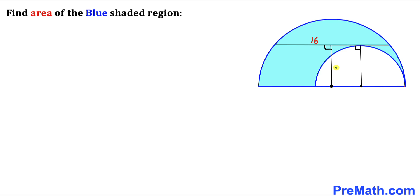Moreover, this line is going to be perpendicular to this chord as well, since these two lines are parallel. Let me call this radius for this smaller semicircle as lowercase r. Then this length is going to be lowercase r as well.